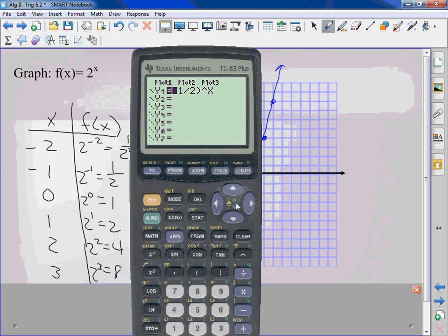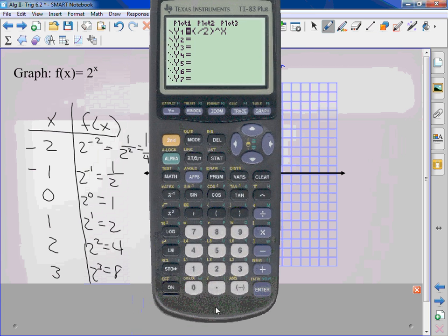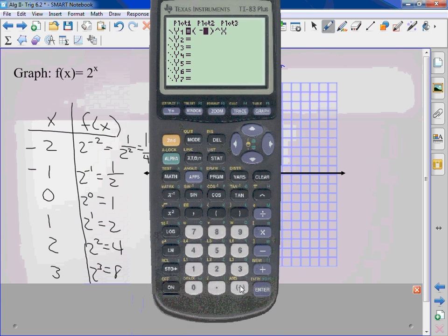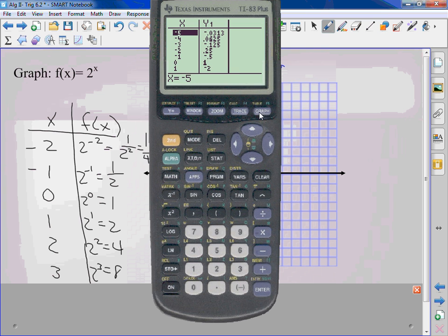Now originally I said it had to be positive, right? If it's negative, and I hit graph, nothing showed up. Second, graph. What do you notice? Look at my numbers. It goes positive, negative, positive, negative, positive, negative. It's not exponential. For exponential, for these problems, it has to be positive.